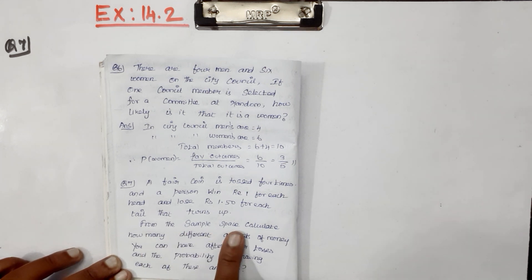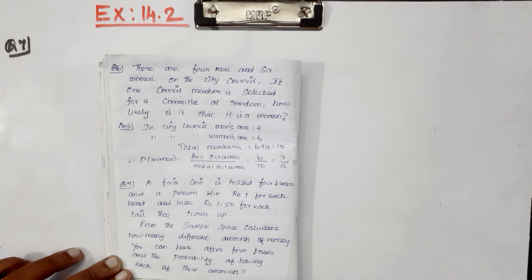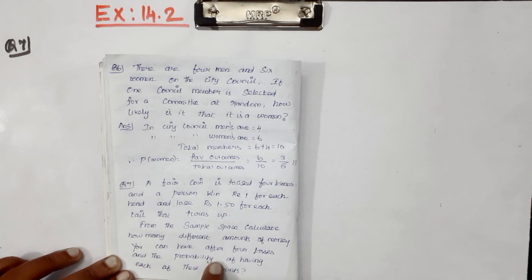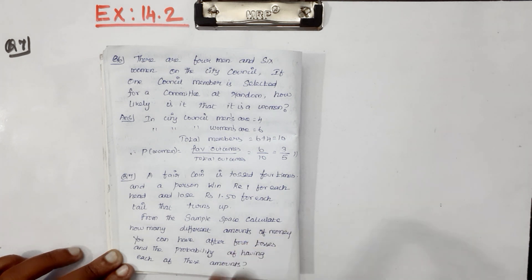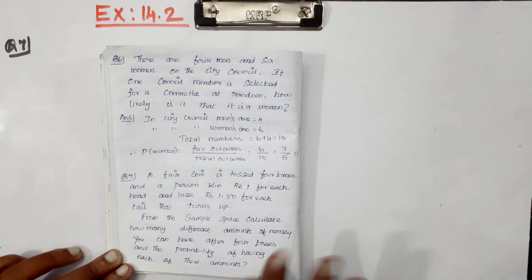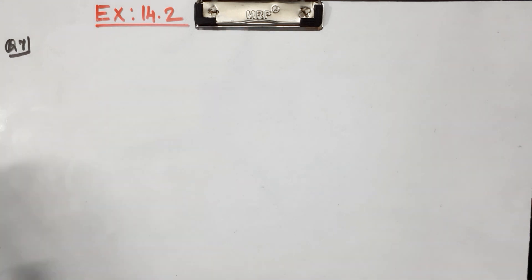From the sample space, calculate how many different amounts of money you can have after 4 tosses. So, after 4 tosses, how many amounts of money can you win? The values involved are Rs. 1 for a head and Rs. 1.50 loss for a tail.